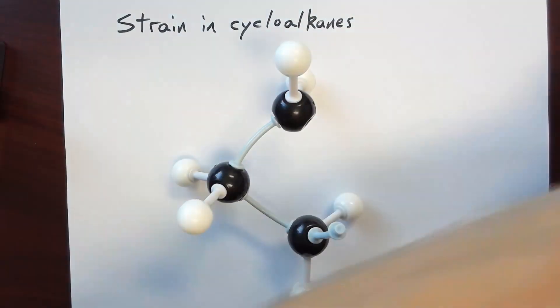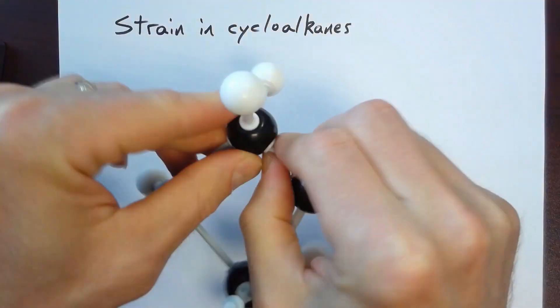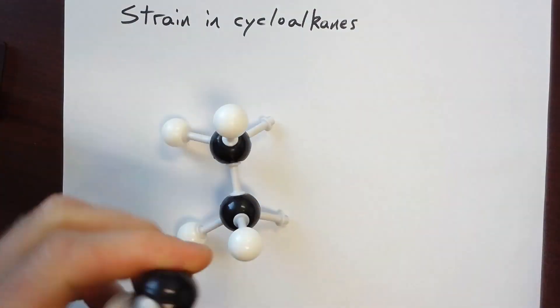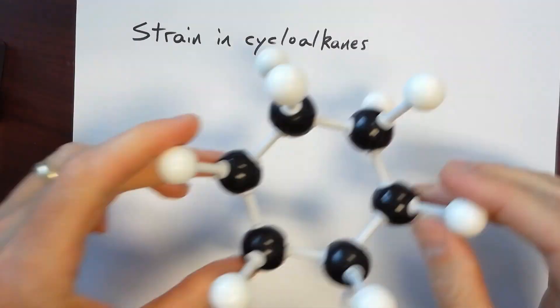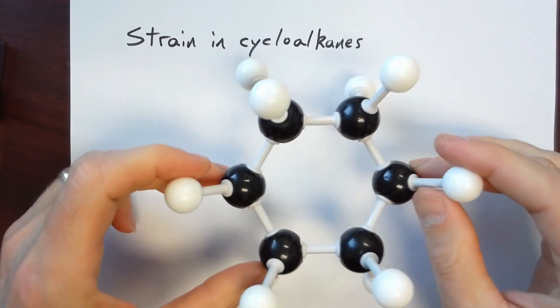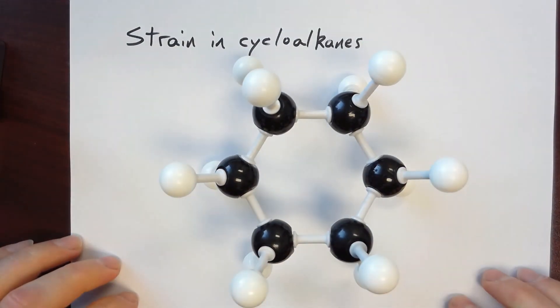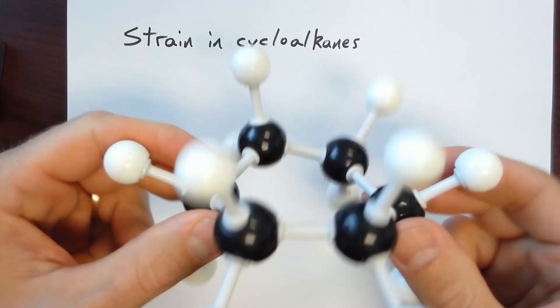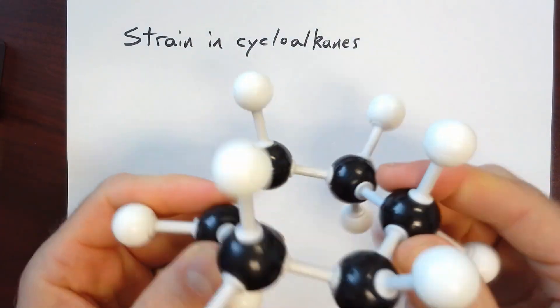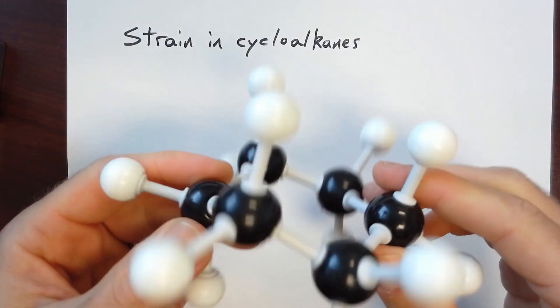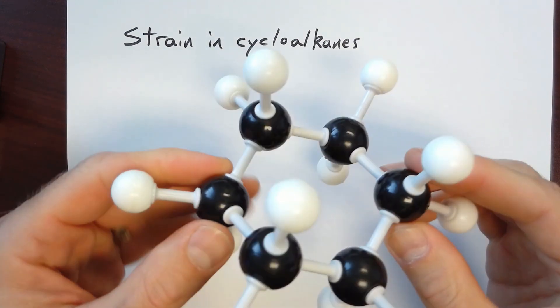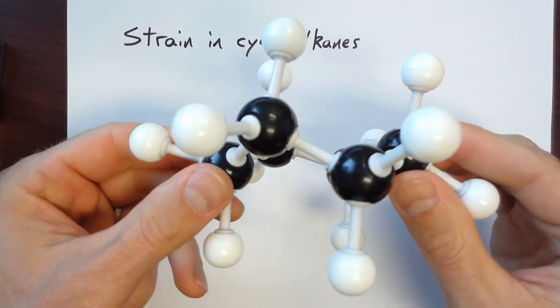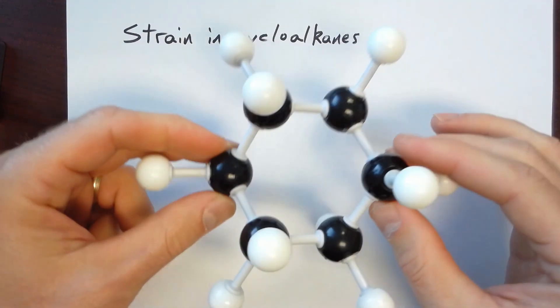We're going to spend most of our time talking about cyclohexane. And so let me build cyclohexane. So here's cyclohexane. And cyclohexane can actually exist in a couple of different conformations. The one that we're going to spend most of our time talking about is the so-called chair conformation. And so this is the chair conformation.